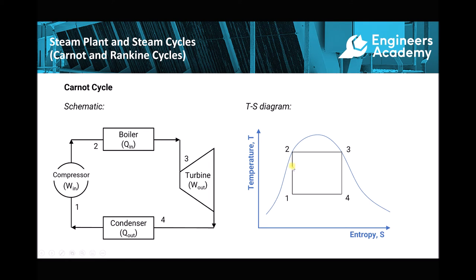On the T-S diagram, anything under the curve is steam, anything to the left of the curve is water, and anything to the right is superheated steam. Throughout this cycle we have saturated steam. At position one we have steam with a relatively high moisture content. If we're on the left line we have wet saturated steam; if we're on the right line we have dry saturated steam; anywhere in between we have a dryness fraction. For example, a dryness fraction of 90% means 90% steam and 10% water, while a dryness fraction of 10% means 90% water and only 10% steam. At position one we have steam with a very low dryness fraction.